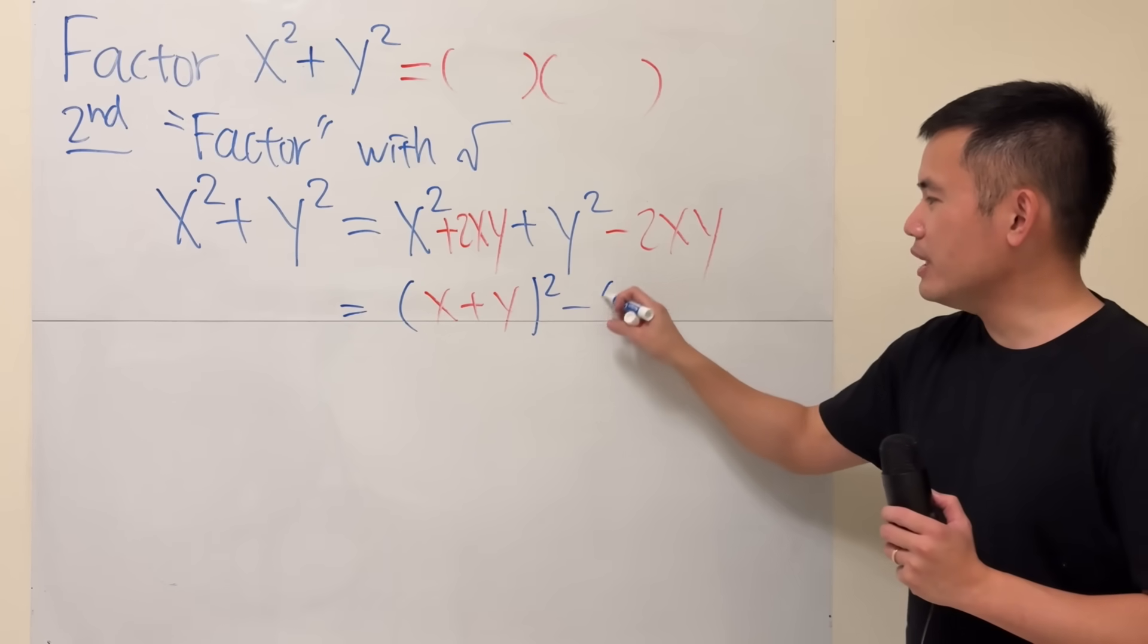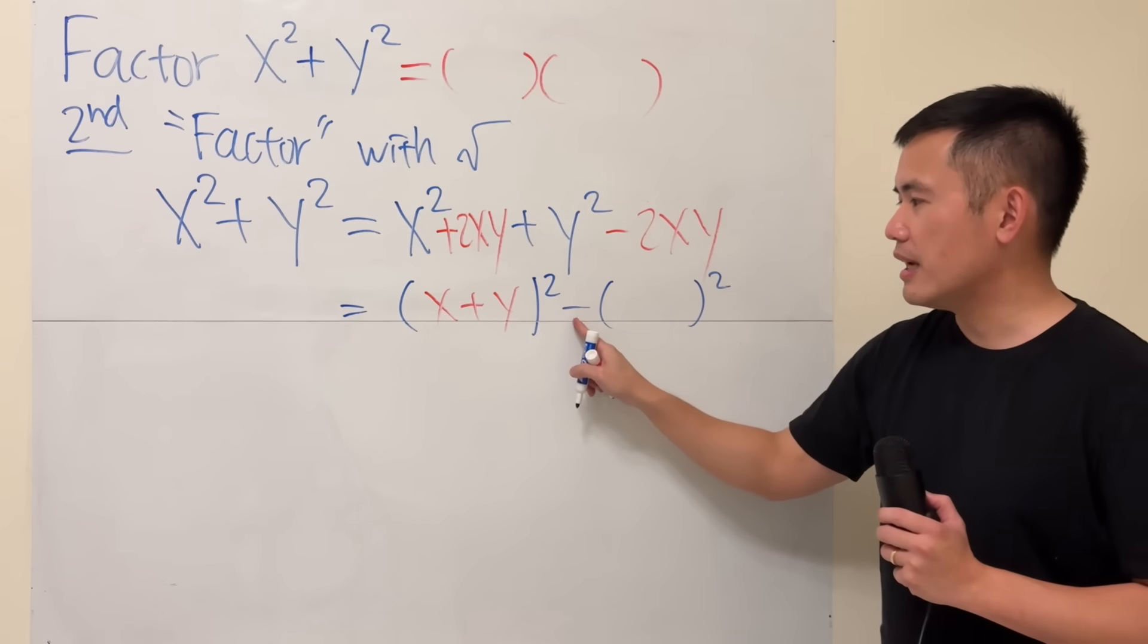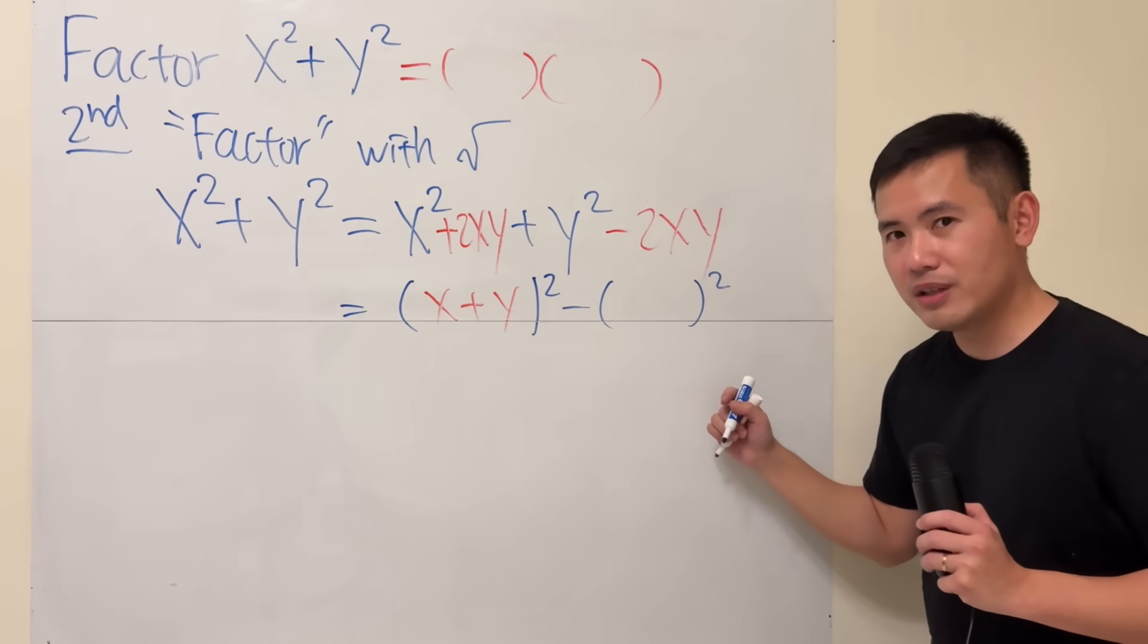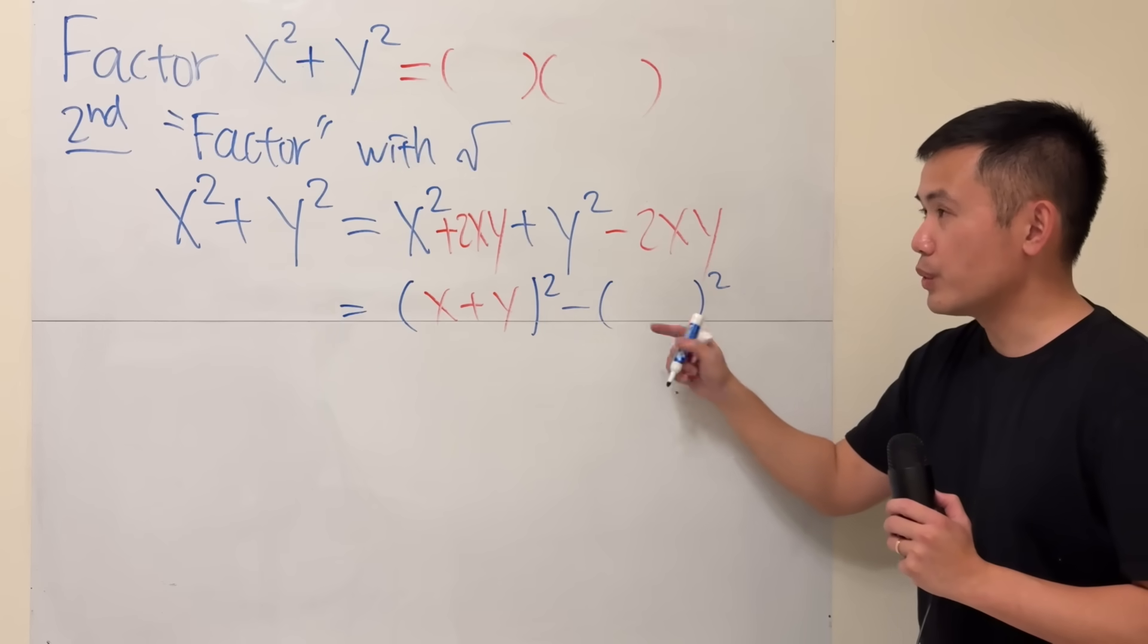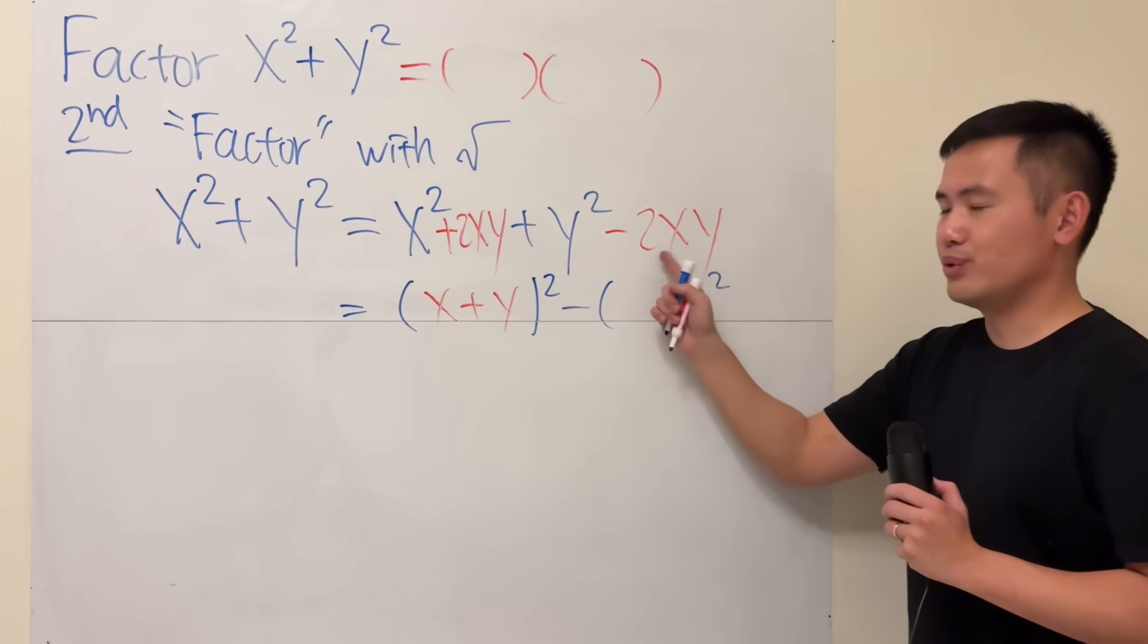Remember, if we can put this as something to the second power, then we can factor this as the difference of two squares. So, let's do the same thing we did earlier. We have a negative right here already, so we don't need to use the i. But for the 2, what square would give us 2? The answer is square root of 2.